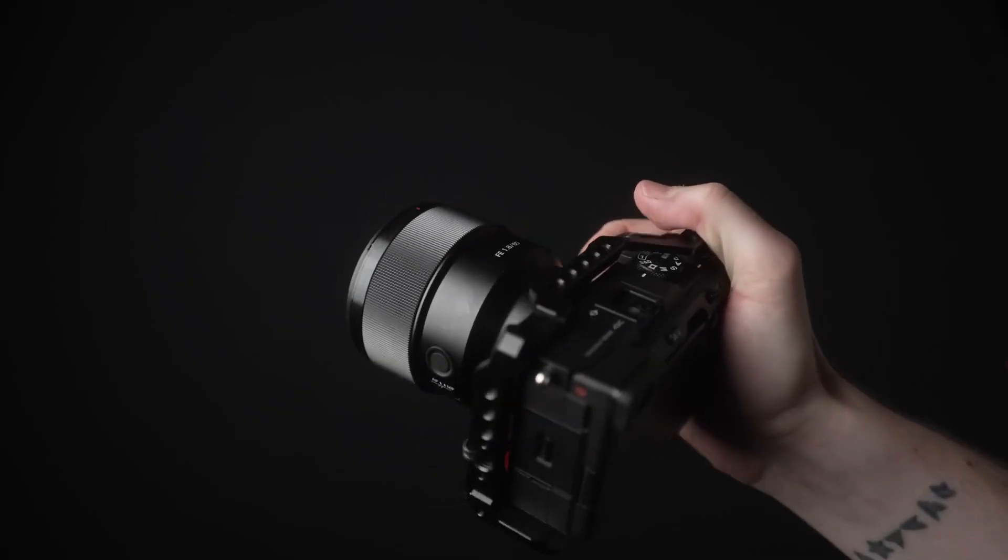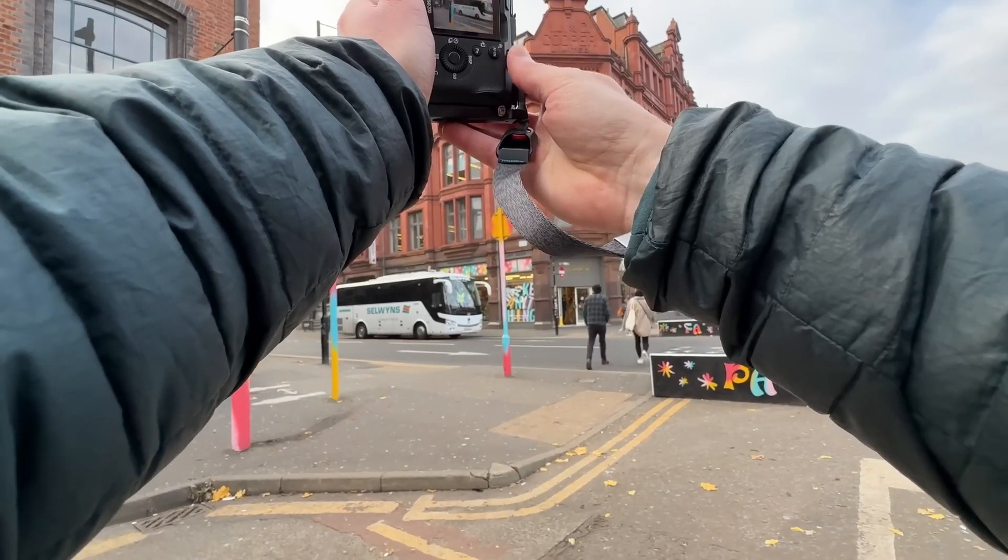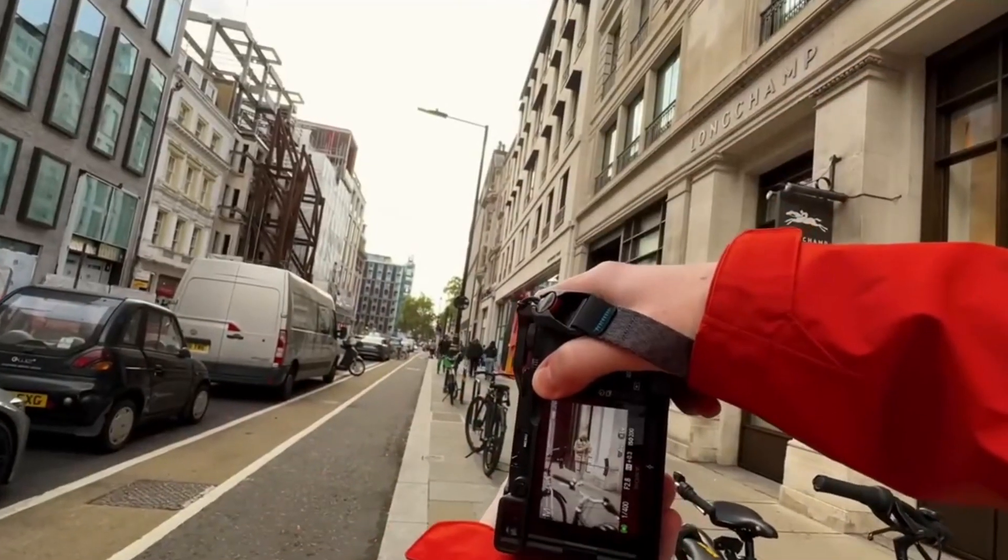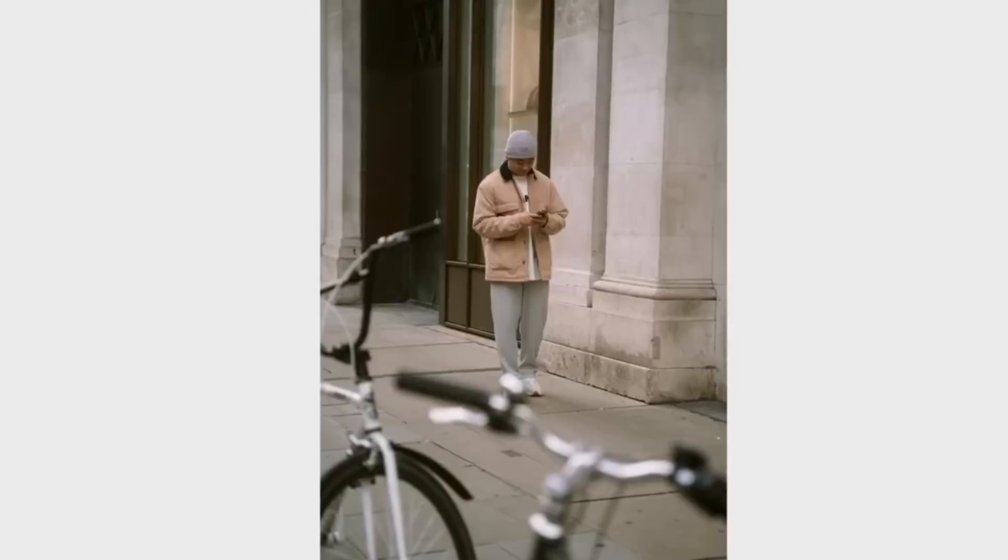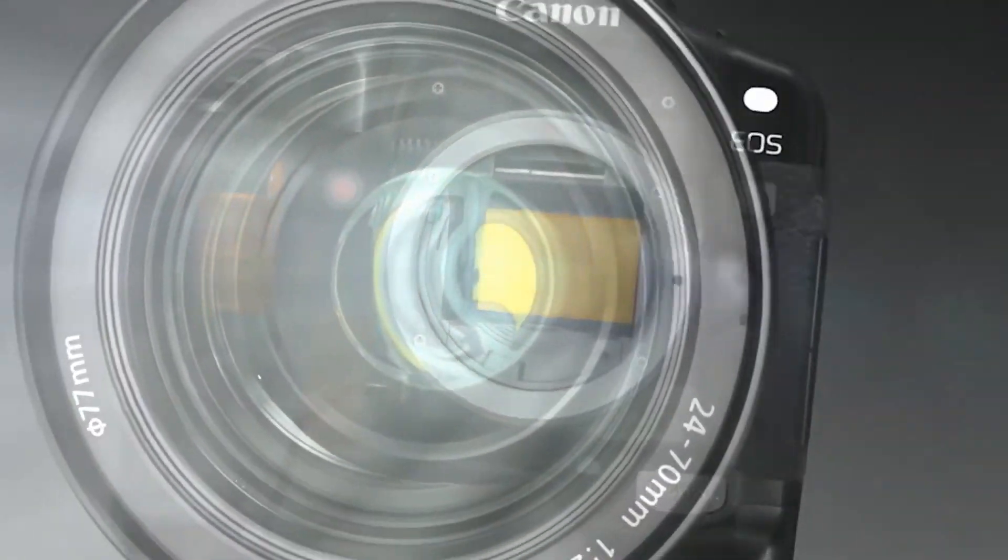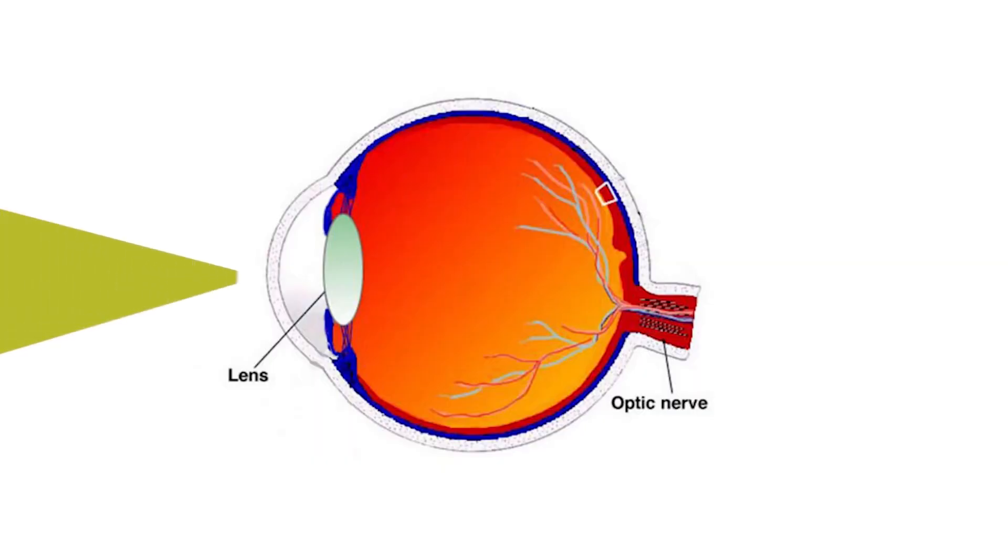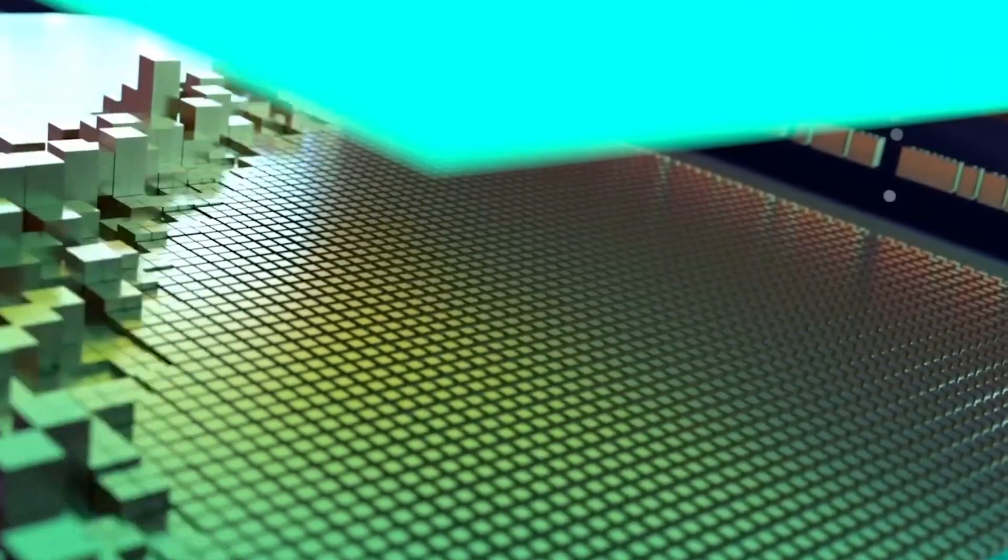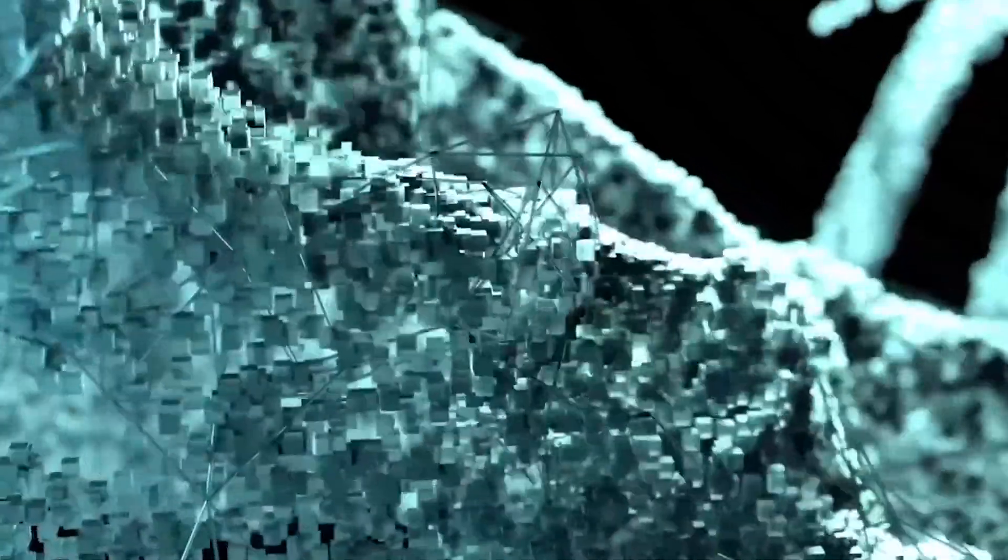Imagine you're holding a digital camera in your hand. You know that when you take a picture, the camera records the light that comes through the lens and turns it into a digital image. But have you ever wondered how this process actually works? Inside the camera, there is a sensor, a small device that acts like the eye of the camera. This sensor is made up of millions of tiny squares called silicon photosites or pixels. When light enters the camera lens and hits these pixels, something amazing happens.